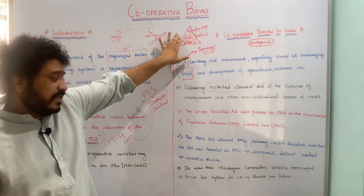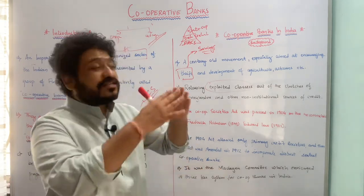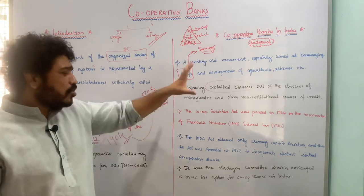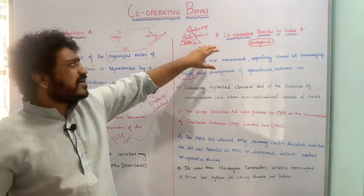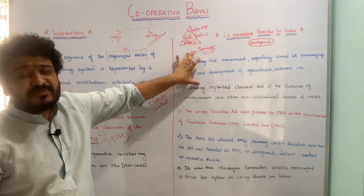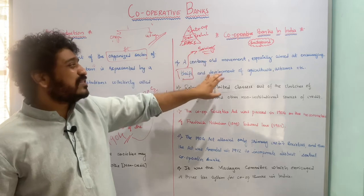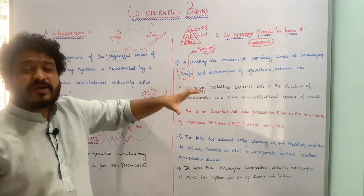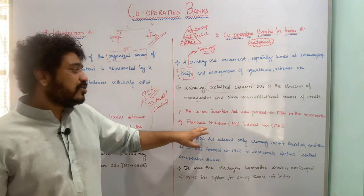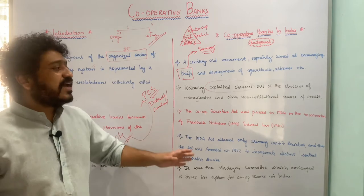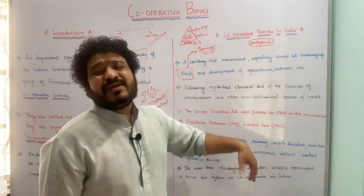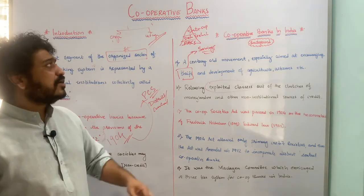The third important development came in 1914 when the Maclagen Committee envisaged the three-tier system, incorporating the apex level institution which is the state cooperative bank. So to summarize: there was a movement encouraging savings and development of certain segments, aimed at reducing exploitation; in 1904 an act was passed on the recommendation of two individuals from the British government; amendments followed, and in 1914 the Maclagen Committee recommended a three-tier structure for cooperative banking in India.